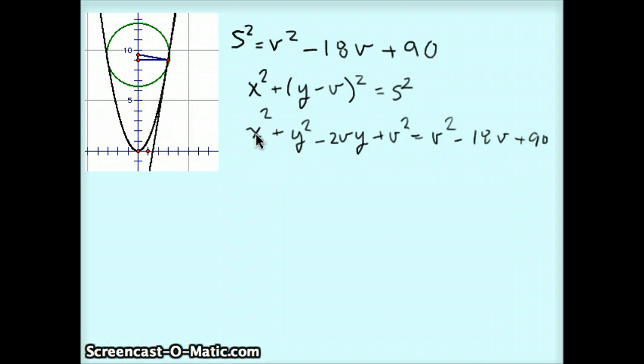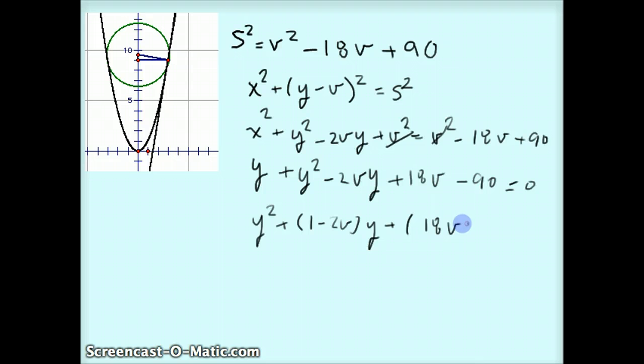There are a lot of variables here, and one way I'm going to eliminate some of them is using the relationship of the parabola. Since Y equals X squared is the equation of the parabola, this X squared can be turned into Y. I'm going to move everything from the right over to the left, and a couple of things will happen then. Minus 2VY. For one thing, the V squareds will cancel out, and then I'll get plus 18V minus 90 equals 0. When I simplify this thing further and put it in decreasing powers of Y squared, I get Y squared plus 1 minus 2V times Y plus 18V minus 90.